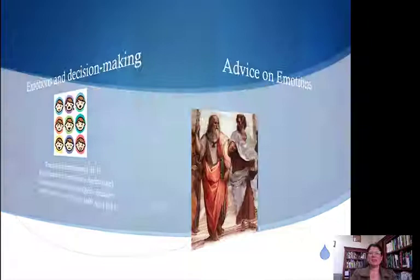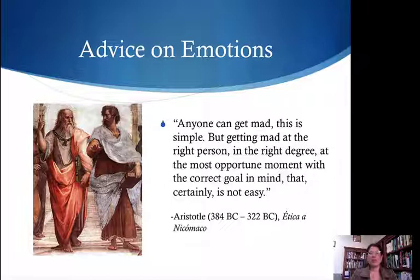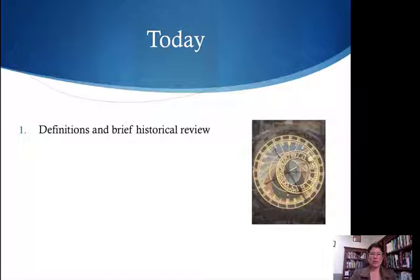This is something that's been around for quite a long time. We know that even back to Aristotle, there was some wonderful advice about how to manage emotions. Anyone can get mad — this is simple. But getting mad at the right person, in the right degree, at the most opportune moment, with the correct goal in mind — that certainly is not easy. Being able to not only identify emotions but actually manage them is key to social interactions. Today we want to look at six points.